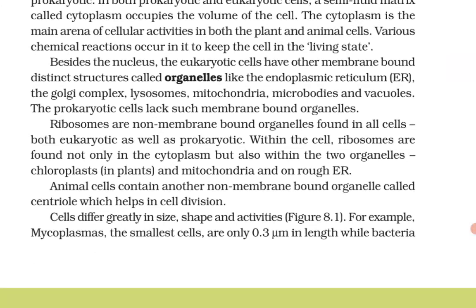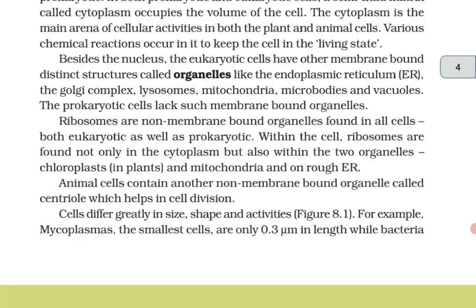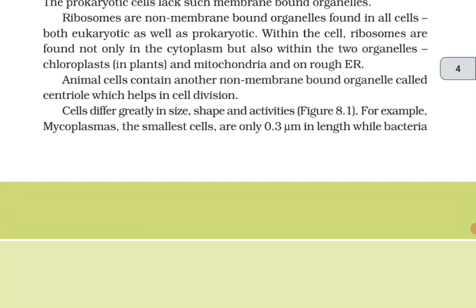Prokaryotic cells lack such membrane-bound organelles. Ribosomes are the non-membrane-bound organelles found in all cells, both eukaryotic and prokaryotic. Within the cell, ribosomes are found not only in the cytoplasm but also within chloroplasts in plants and mitochondria, and on rough endoplasmic reticulum. Animal cells contain another non-membrane-bound organelle called centriole, which helps in cell division.